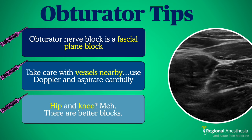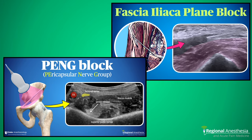Finally, we used to use these blocks extensively for hip and knee indications. The anterior branch sends fibers to the hip and the posterior to the knee, and it was effective. But we have more targeted blocks these days that are simply more effective. In hip surgery, the PENG or fascia iliaca blocks are hard to beat, and similarly the adductor canal, iPACK, and genicular blocks for the knee.